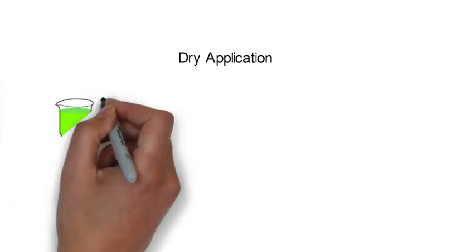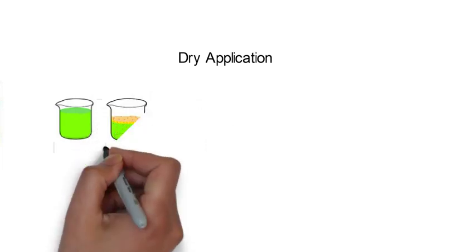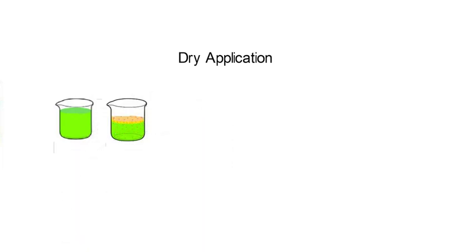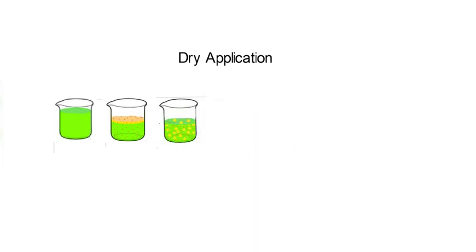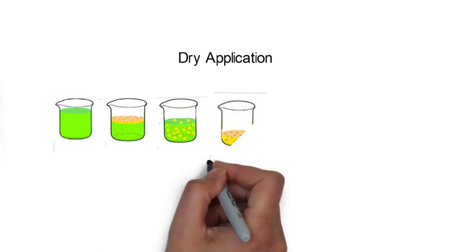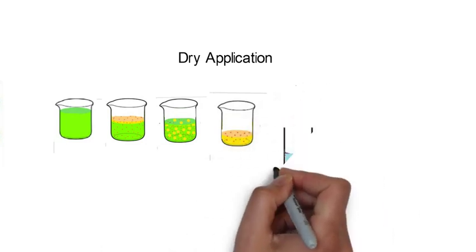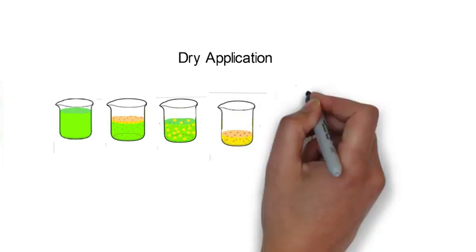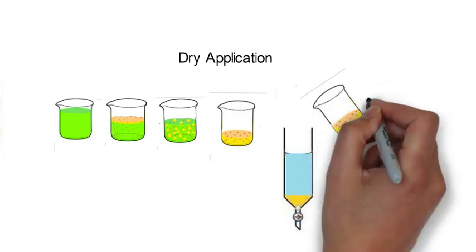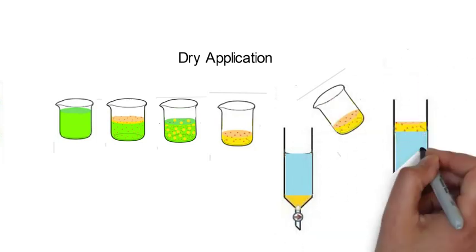Dry application: In dry application, take fresh solvent in a beaker. After that, add the sample which is to be separated and mix it. Also put silica in it, so the silica will get absorbed, and let the solvent evaporate. Now remaining is sample and silica. Add that sample and silica at the top of the column. The column is ready for elution.